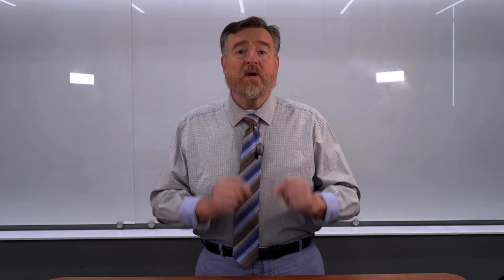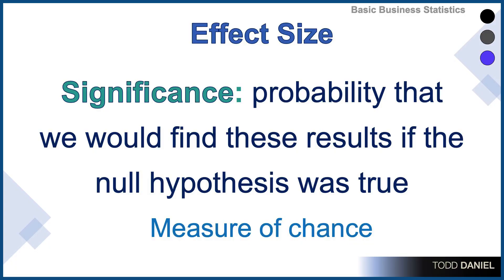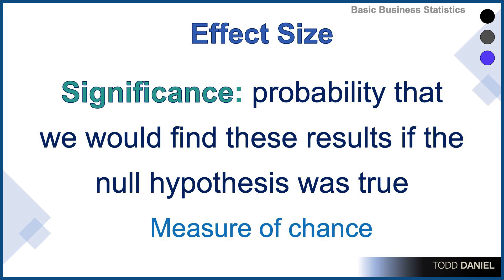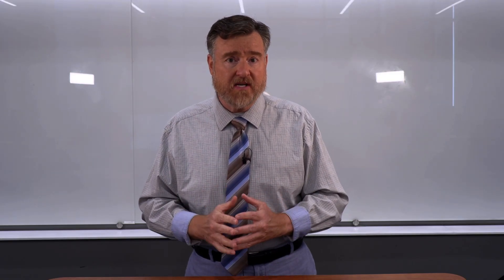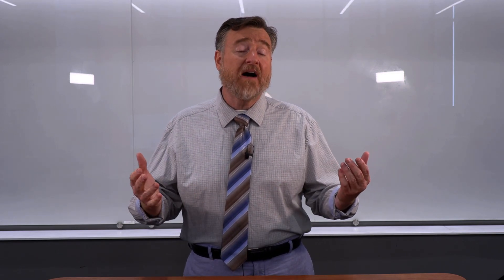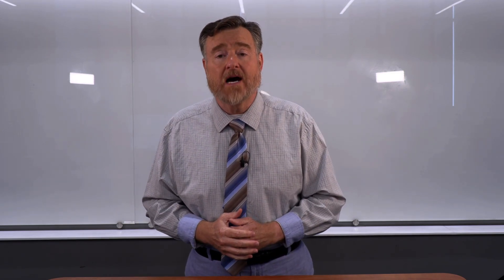Let's review. When we do hypothesis testing, significance reports the probability that we would find these results — the ones that we found — if the null hypothesis was true. And we determined that the null hypothesis is never actually true. Really, what we are measuring with a p-value is a measure of chance: the likelihood of finding this particular outcome. Less than five times in a hundred would we find this outcome by chance.